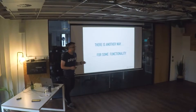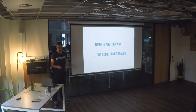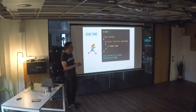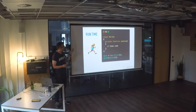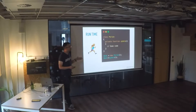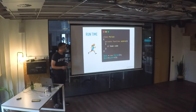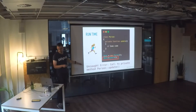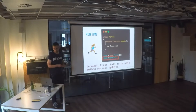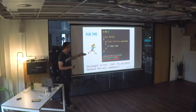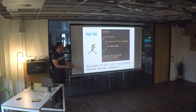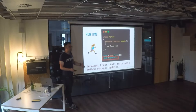Before we discuss this other way, let's have a quick discussion about runtime and static analysis. Any feature in PHP — if you misuse it — will show you issues at runtime. For example, if we ran this code with a Person class that has a private method called 'update', and we create an instance and call that method, we get an error: trying to call a private method. This is happening at runtime.